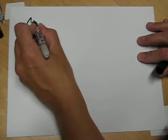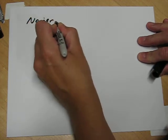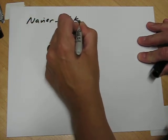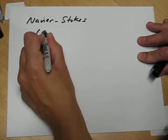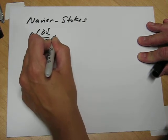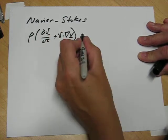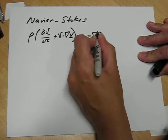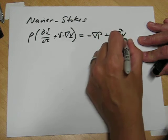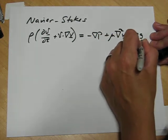So the microscopic balance is the Navier-Stokes equation, which is in a vector tensor form, the inertial terms which are on the left-hand side, the pressure forces, the viscous forces, and the gravity forces.